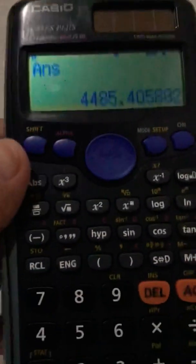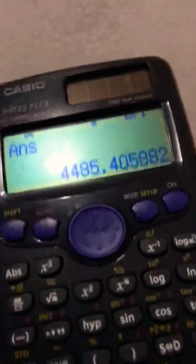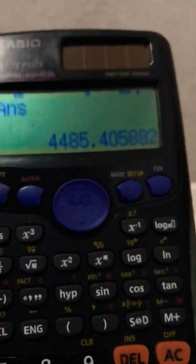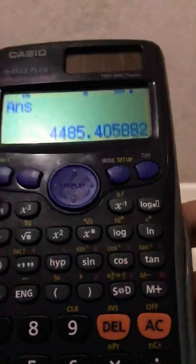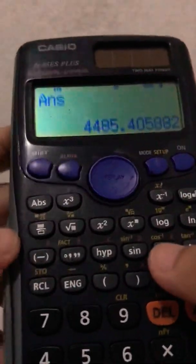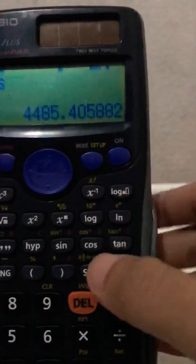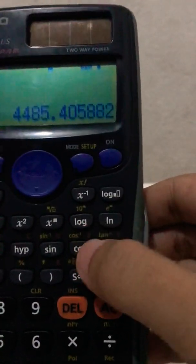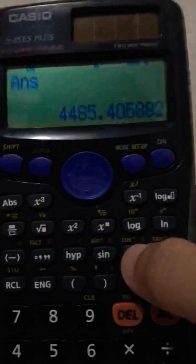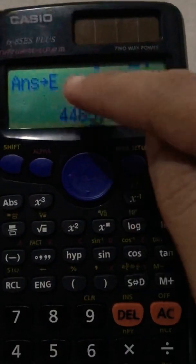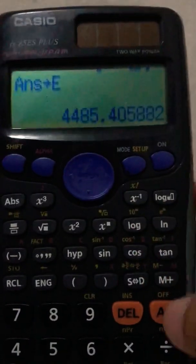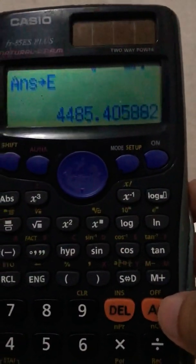Shift store, notice that we now have STO over there at the top, so we are in the process of storing. So shift store, let's say this time I want to save that to letter E, so just have to press this key right away. So same with the ClassWiz earlier, we'll have that. So let's check if it's really in E. E there, still red. So alpha E equals.